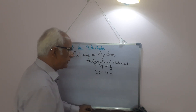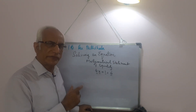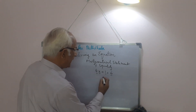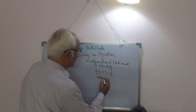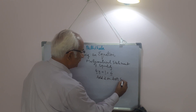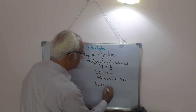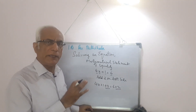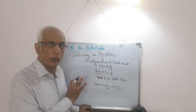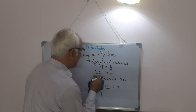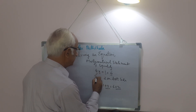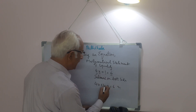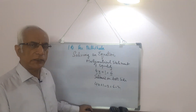In a linear equation, you can carry out the same mathematical operation on both sides and the equality will be maintained. For example, if I add 2 on both sides: 4x plus 1 plus 2 equals 6 plus 2 — the equality is maintained. Similarly, if I subtract 2 from both sides, the balance of the equation will not be disturbed and the equality will be maintained.